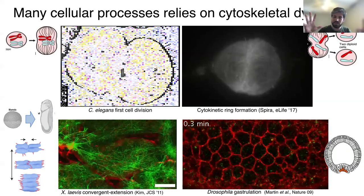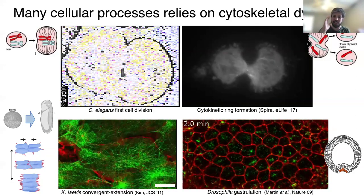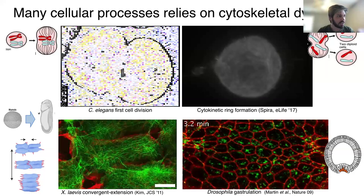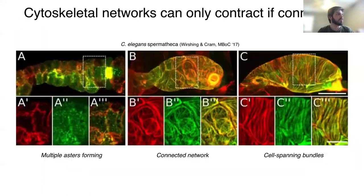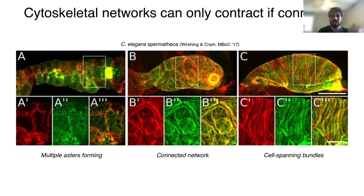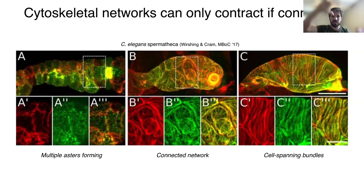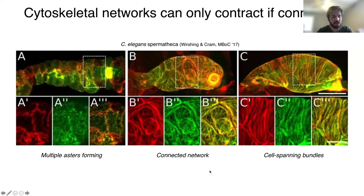These processes can only work if the cytoskeleton is functional and if it's connected. We have to span the whole area of the cell to actually make it work. If it's disconnected, it cannot contract. You can see this, for example, in C. elegans spermateca development. At the beginning, there is not much actin, and the actin system contracts to small esters — small puncta that fluctuate and appear and disappear. As the spermateca organ develops, you get more actin, actin bundles form, and then you can connect the whole network, so the cell can contract to push things away. This is experimental evidence of how important the connectivity of the network is.